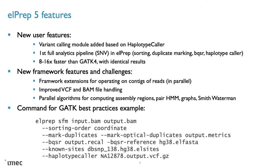While our main focus with Lprep has been on improving performance, we also tried to simplify the user experience. At the bottom of the slide we show the complete Lprep command for executing the GATK best practices pipeline for variant calling. It's a relatively simple command that defines the input and output BAM files followed by the different options that implement the individual steps of the pipeline such as sorting, duplicate marking, BQSR, and variant calling using the haplotype caller algorithm. This command will actually execute the full pipeline.